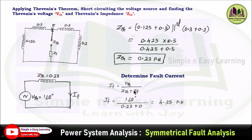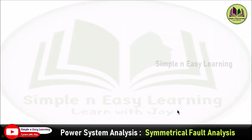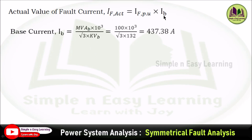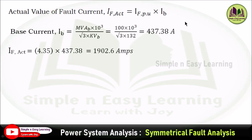The fault current is I_F = V_Thevenin / (Z_Thevenin + Z_F). Since the fault impedance is not specified, Z_F = 0. So I_F = 1∠0° / 0.23 = 4.35 per unit. The actual fault current equals the per unit value multiplied by the base current, where base current = (MVA_base × 10³) / (√3 × kV_base). With 100 MVA base and 132 kV at the fault location, base current = 437.38 A, giving an actual fault current of 1902.6 A.